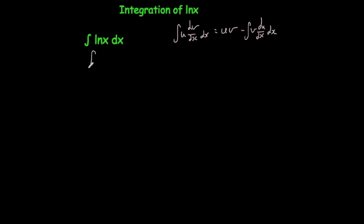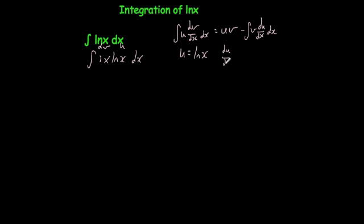What we're going to do is write this integral as the integral of 1·ln(x) dx. We tend to call ln(x) our u, and we tend to call anything else dv. So u is going to be equal to the natural log of x, and whenever you differentiate that it gives you du/dx equals 1/x.